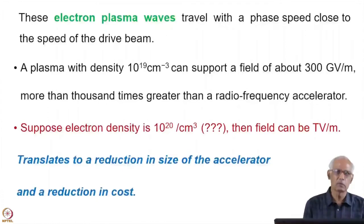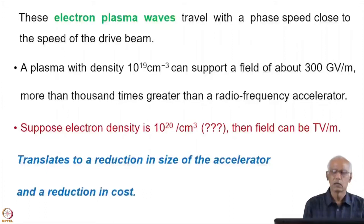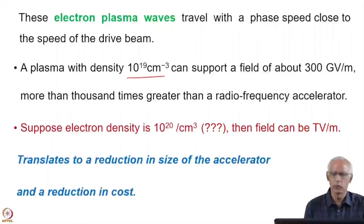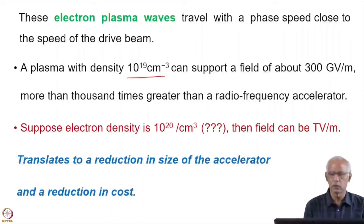These electron plasma waves travel with a phase speed close to the speed of the drive beam, which is the laser. The laser moves almost at the velocity of light, and therefore high-energy electrons can also be accelerated. If the plasma density is of the order of 10^19 per cc, it can support a field of about 300 GV per meter — more than 1000 times greater than radio frequency, even with superconducting structures.